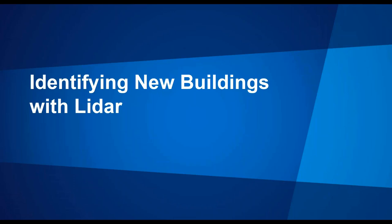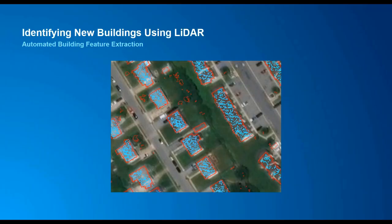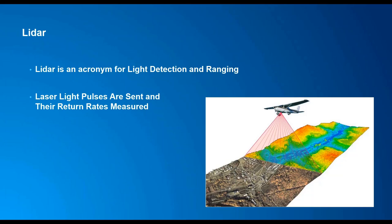The next section covers identifying new buildings with lidar. LiDAR is increasingly being used to identify new features such as buildings and automatically extracting them into a geodatabase. Many nations are already collecting LiDAR over their countries. We'll cover a few basic concepts of LiDAR data to understand how it can be used for automated feature extraction.